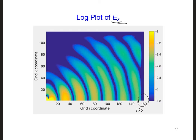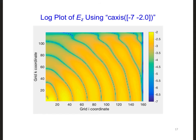What's going on with this? Well, remember, we set the c-axis to be minus 3.2 to minus 2. So all the values outside of this range are either dark blue or bright yellow. If we change the range from minus 7 to minus 2 to allow us to see smaller EZ values, which we would expect in the PML region, since the EZ fields in the PML should be attenuated. This is what we would see.